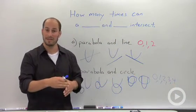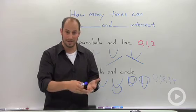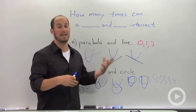So instead of just with lines where the only possibility is infinite, zero, or one, we're going to have different options depending on the shapes.